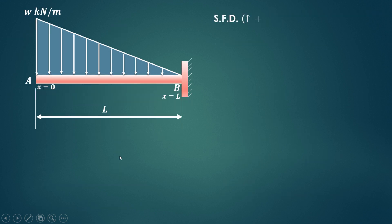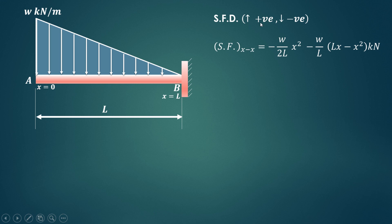Now we draw the shear force diagram. The convention is: upward forces are positive and downward forces are negative. The shear force at any section XX is given by the relation just derived. At point A, X is measured from point A, so X equals 0. Substituting X equals 0, all terms become zero, so the shear force at A is 0.